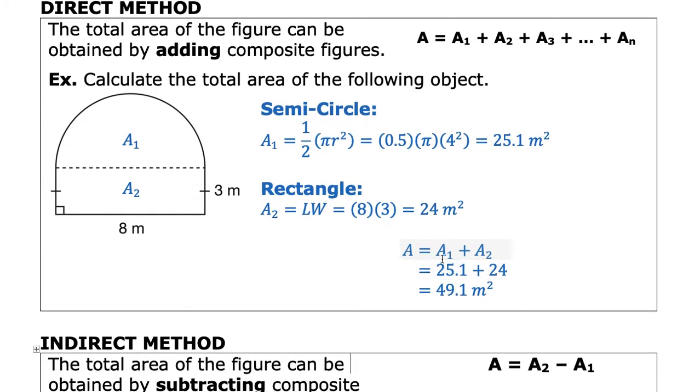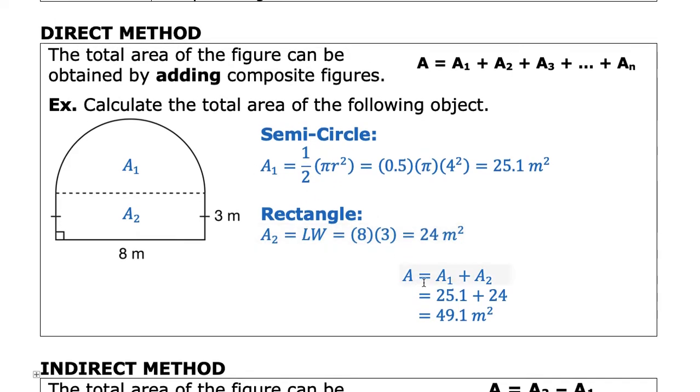The strategy, the direct method, involves adding them all together. So I say A without any description, just meaning the total area, is equal to area 1 plus area 2. Adding these two together we get our total area. Notice the units stay the same.